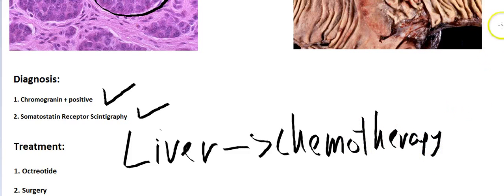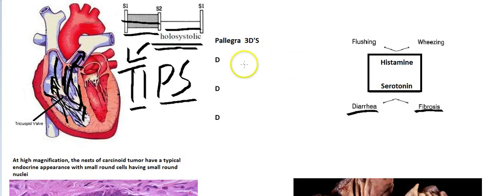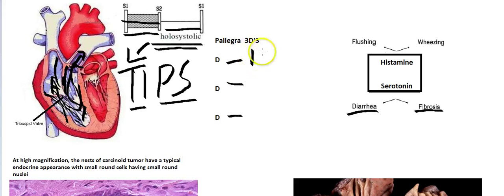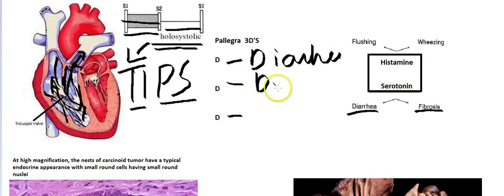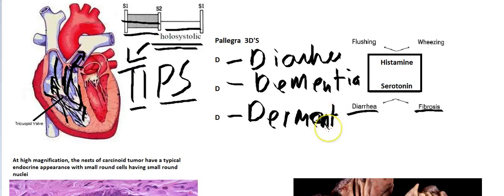One thing I did forget to mention is that it does cause pellagra. I want to talk about the three D's of pellagra, which will be caused because of the niacin deficiency. The three D's are: Diarrhea, Dementia, and Dermatitis — representing gastrointestinal, neurological, and skin symptoms respectively.